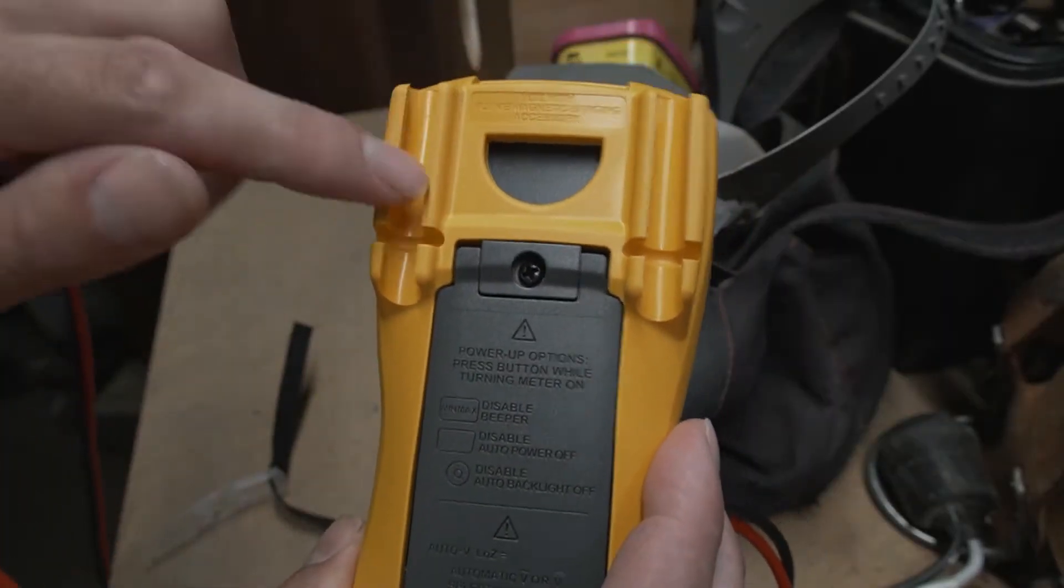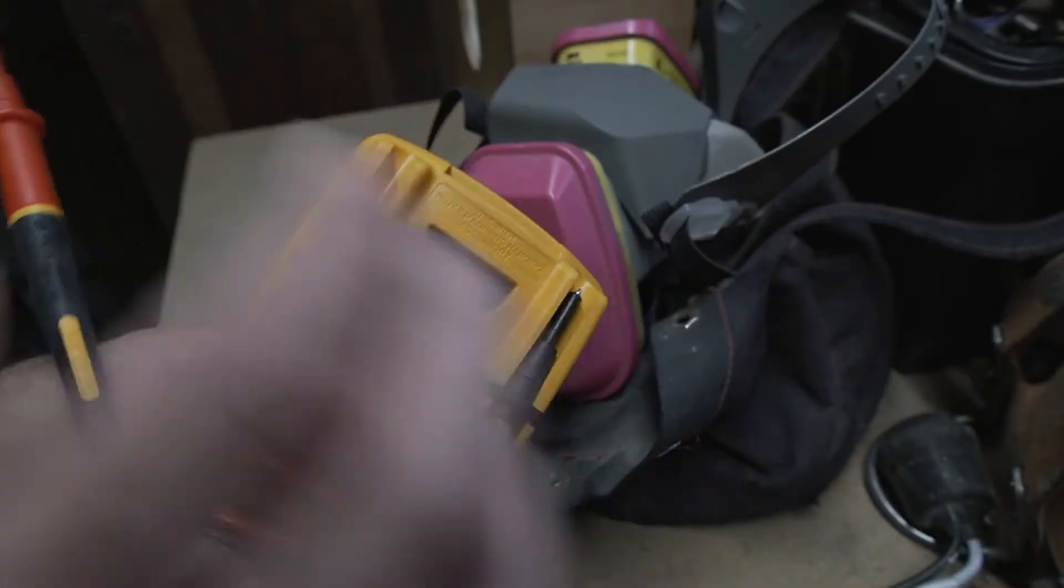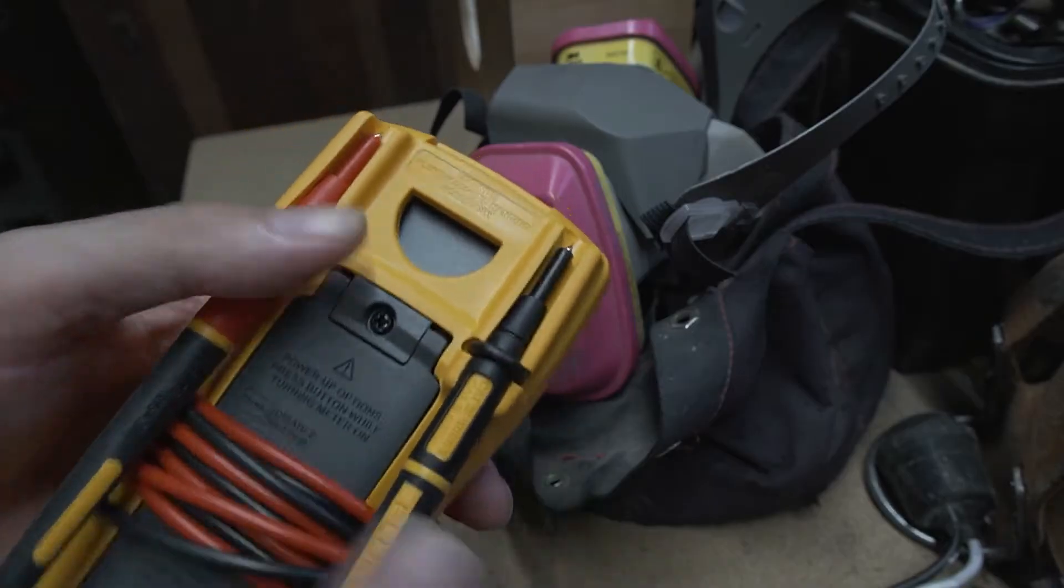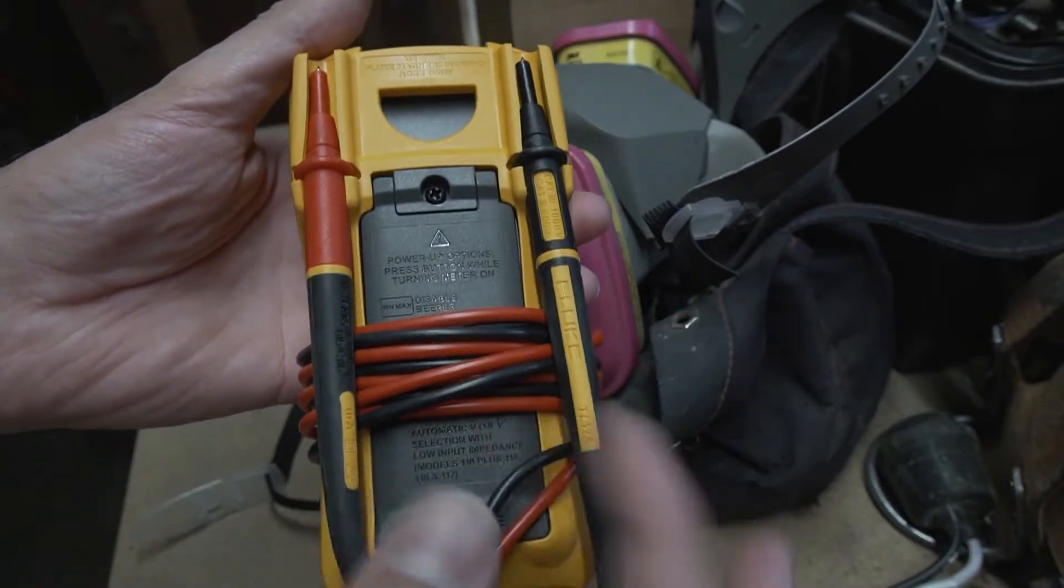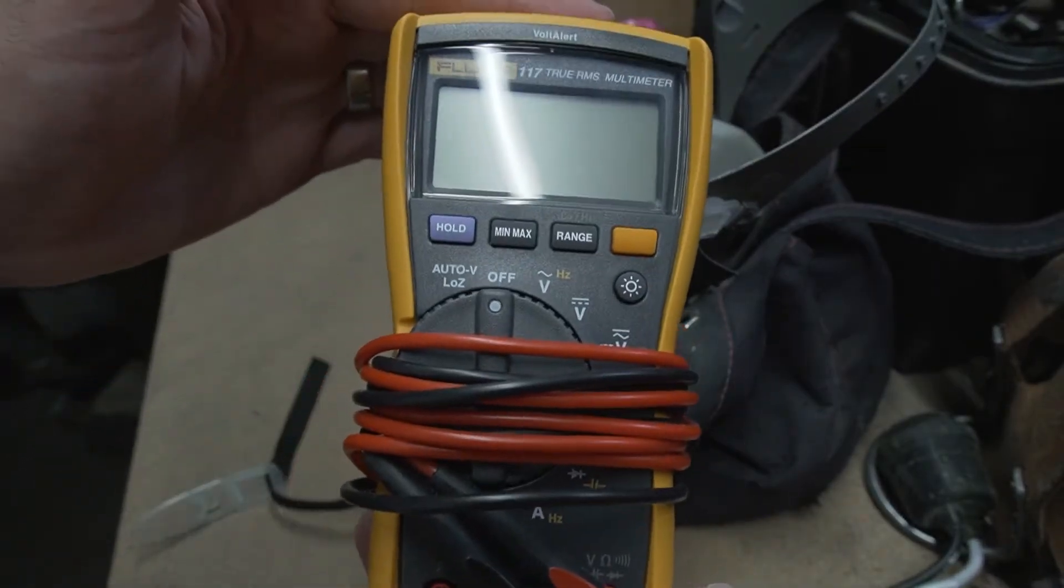The second thing is the back of the multimeter has these clips here. So you can store the leads on the back of the multimeter when you're not using it, and it keeps your wires in place for storage.